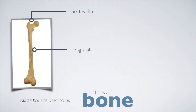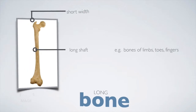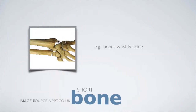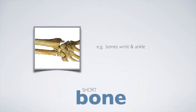Long bones are characterized by a long shaft and comparatively small width. Most bones of the limbs, including those of the fingers and toes, are long bones. Short bones are small in size, and bones of the wrist and ankles are examples of short bones.